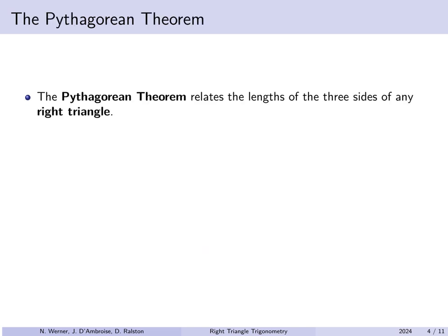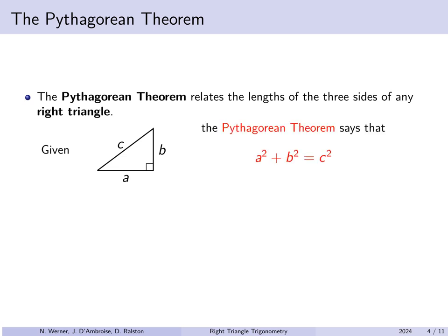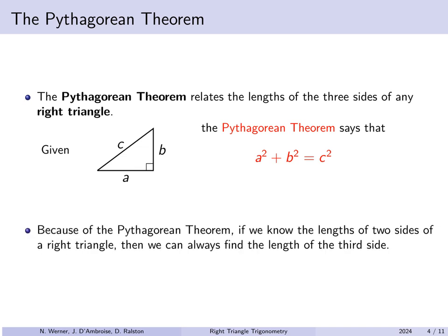The Pythagorean Theorem is a way to relate the lengths of the three sides of any right triangle. Suppose we label the three sides of a right triangle as A, B, and C, where A and B are the two sides that form the right angle. Then A squared plus B squared equals C squared. Because of this, if you know the lengths of two sides, you can always find the third. The side across from the right angle, labeled C, is called the hypotenuse.